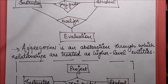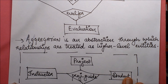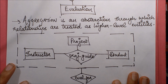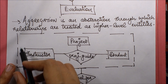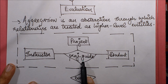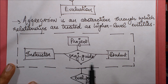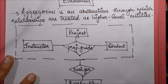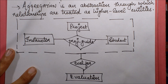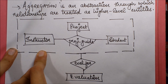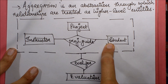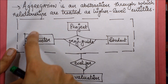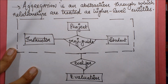Aggregation is basically an abstraction through which relationships are treated as high-level entities. What that means is that this entire relationship becomes a high-level entity, and we connect the evaluation relationship with this high-level entity set. So the instructor who is a project guide for the student on this particular project — that entire thing is now treated as a complex object.